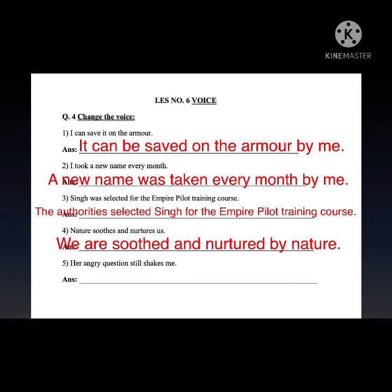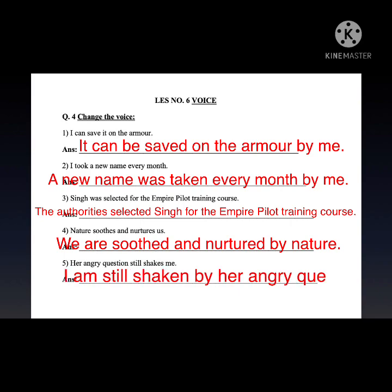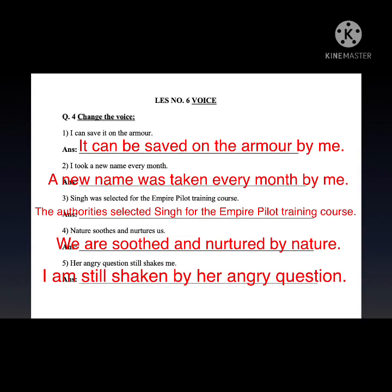'Her angry question still shakes me.' Division: 'her angry question' is the subject, 'still shakes' is the verb, 'me' is the object. Bring the object first — 'me' becomes 'I.' Make V3: 'am still shaken.' Add 'by' and bring the subject. Answer: 'I am still shaken by her angry question.'